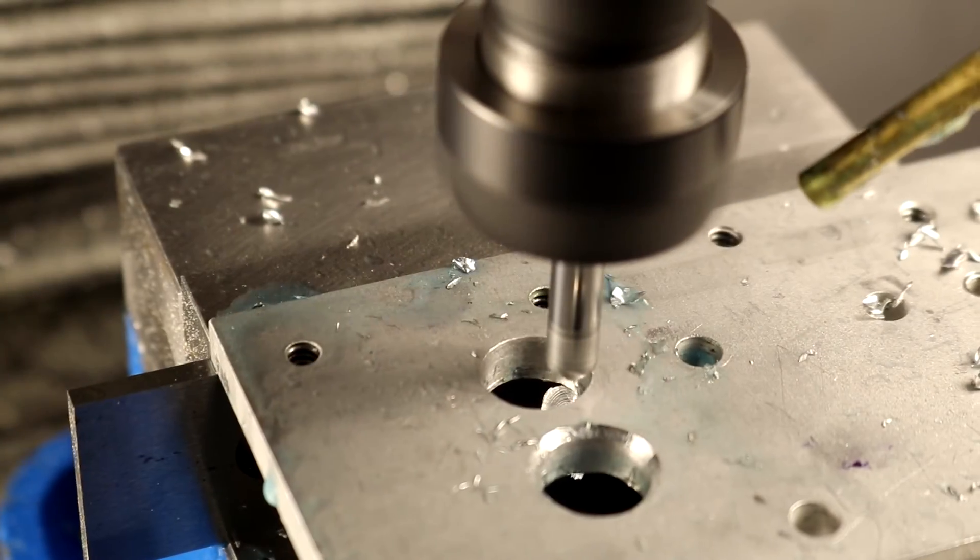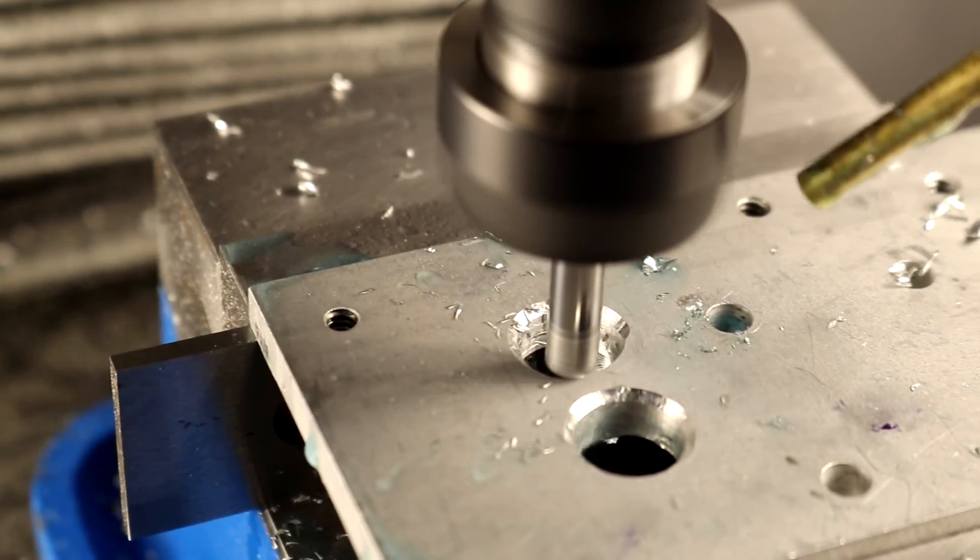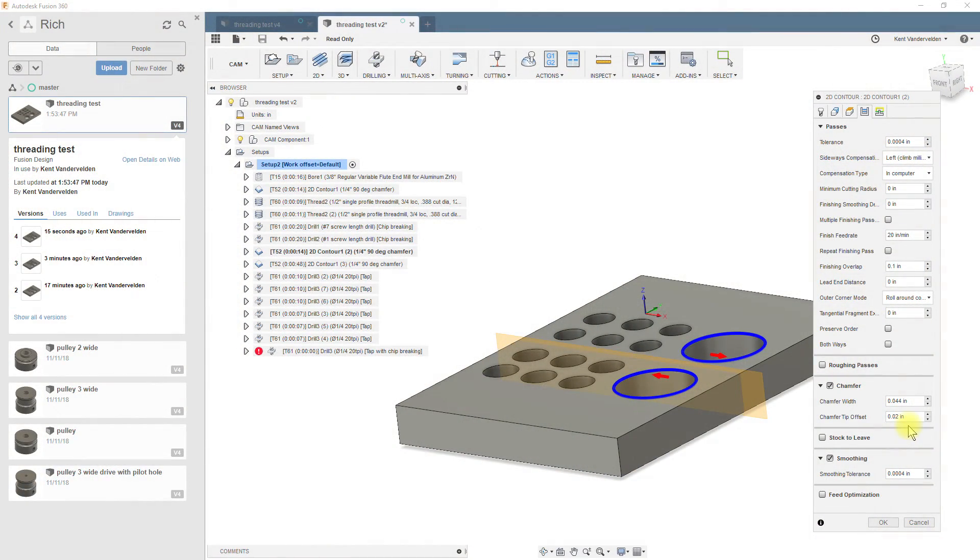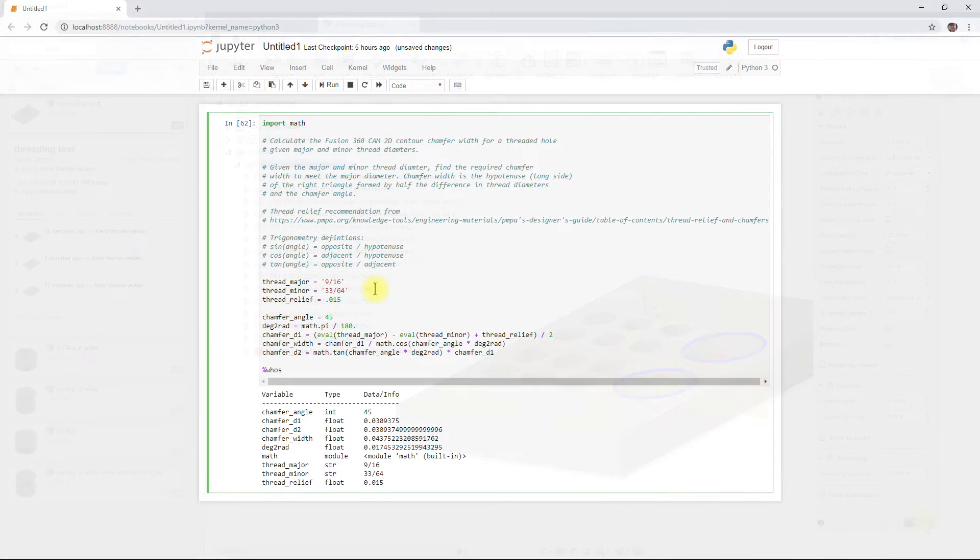Then some thread relief is created with a chamfer tool to help the head of the screw set properly. In Fusion 360, I use a 2D contour to create that chamfer and this small Python script I wrote to calculate the chamfer width.